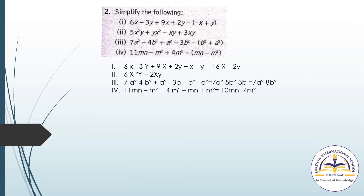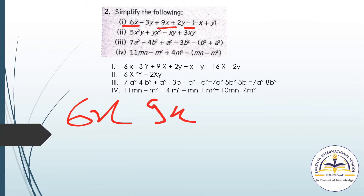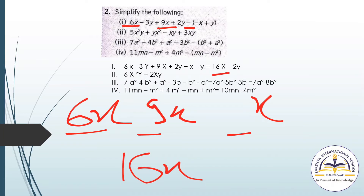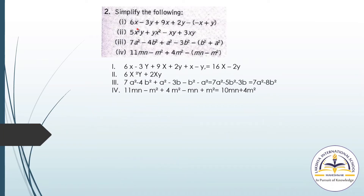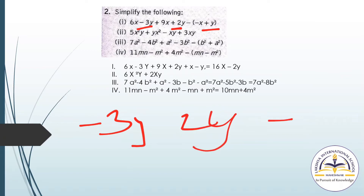First, 6x minus 3y. We will collect the x terms: 6x, 9x, and x (since minus minus gives plus x). So 6, 9, and 1 give 16x. Now for the y terms: minus 3y, plus 2y, and minus y. Minus 3 plus 2 is minus 1, minus 1 minus 1 is minus 2. So minus 2y.